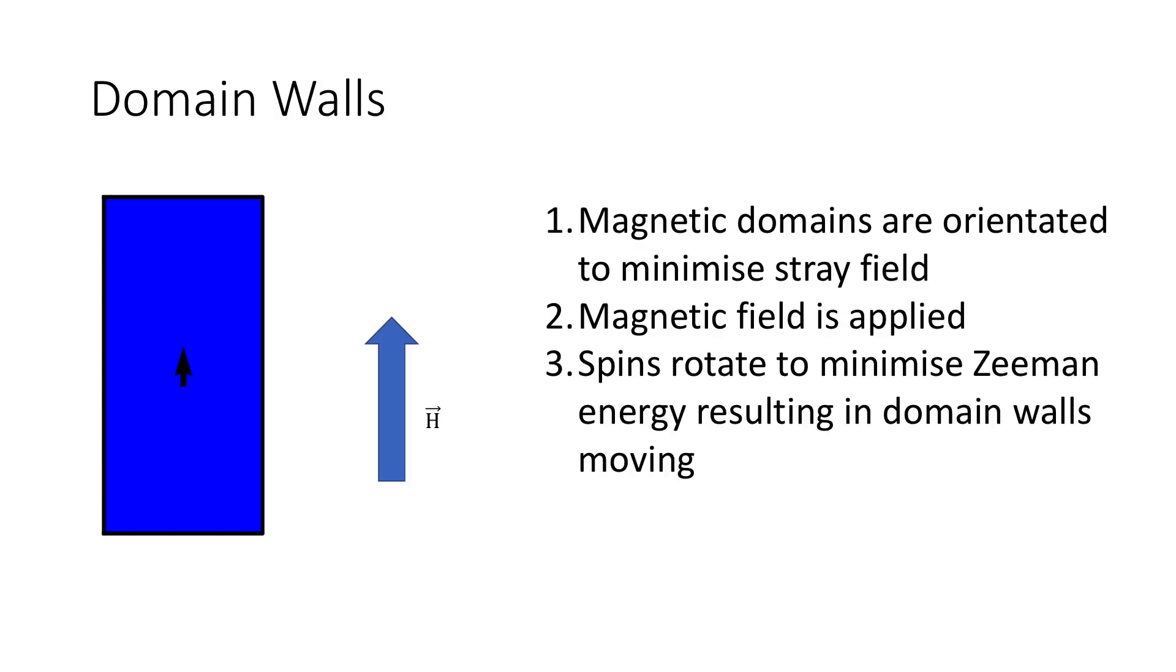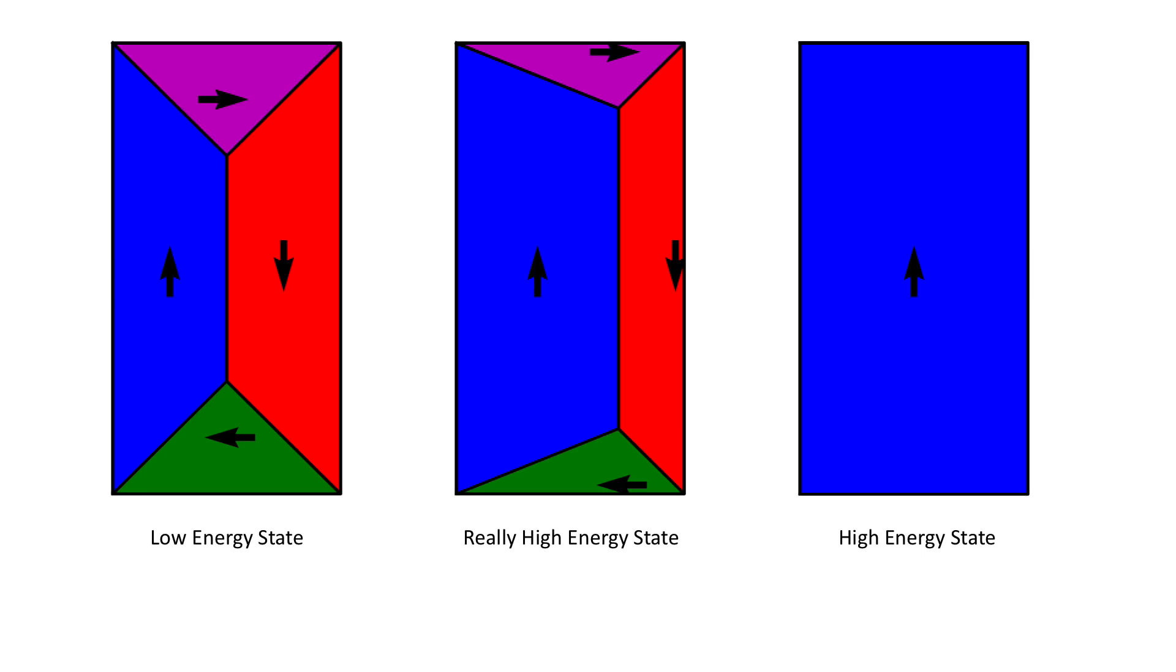But when we remove the field, it stays this way even though it is in a higher energy state compared to the ground state. This is because however high this energy state is, the intermediate state still has a higher energy. In a saturated state we only have the magnetostatic energy, and in the ground state we only really have exchange energy. But the intermediate state has both: it has roughly the same amount of exchange energy as the ground state and nearly as much magnetostatic energy as the saturated state. This presents an energy barrier that must be overcome before the system can go back to the ground state. In many cases you could just tap the material and that should provide enough energy to overcome this barrier.